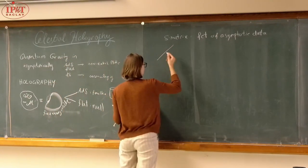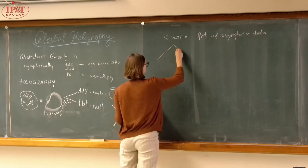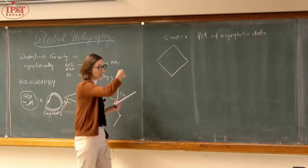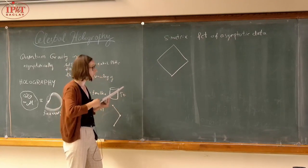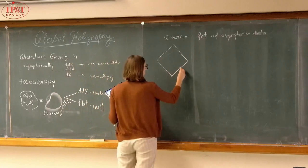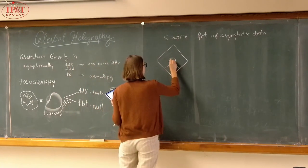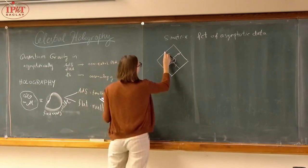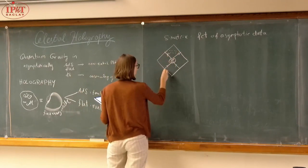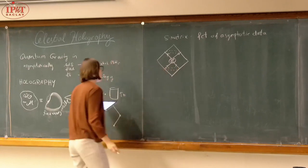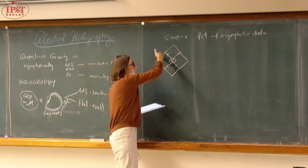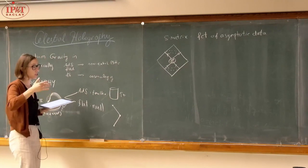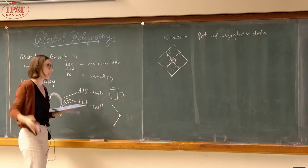If we consider scattering in asymptotically flat spacetime, we start with some initial data in the past and then evolve it to the future. Particles come in from the past, scatter, and then move out to the future. They will hit the future at a point on the sphere, and so the asymptotic data will be described by where these particles enter and exit on this two-dimensional sphere — the celestial sphere, the sphere at infinity if we point towards the night sky.